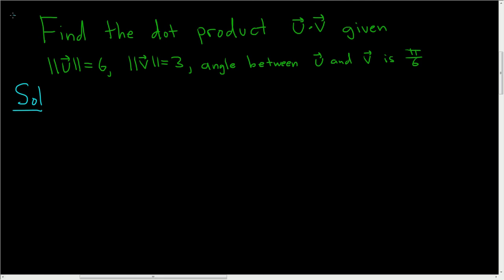We're being asked to find the dot product, except we're not given the actual vectors. Instead, we're given the magnitude of the vectors and the angle between them.